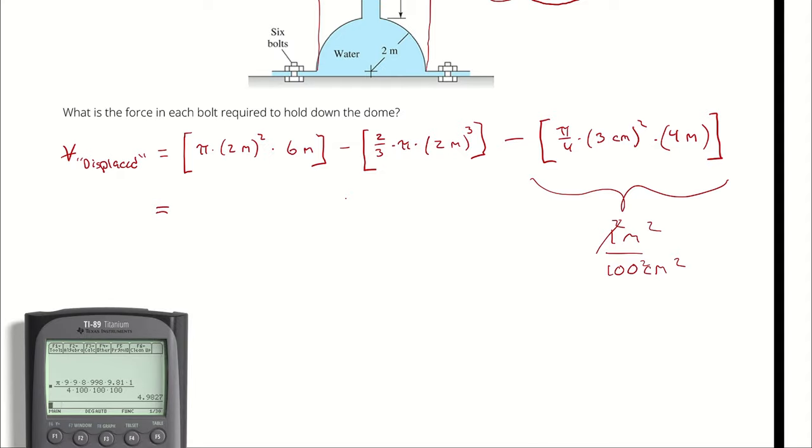I want to take pi multiplied by two times two times six, then subtract two divided by three multiplied by pi multiplied by two times two times two, minus pi over four multiplied by three times three times four times one over 100 squared. Which is 56.64 cubic meters.